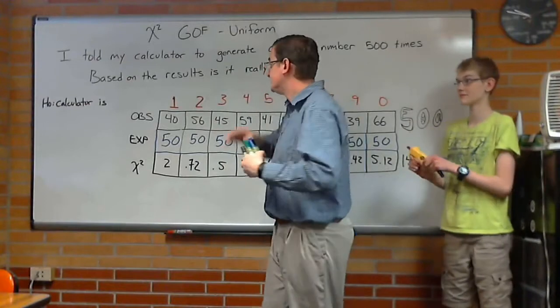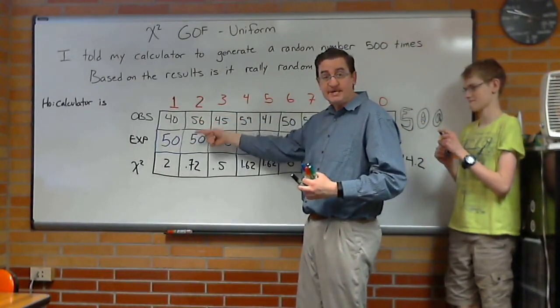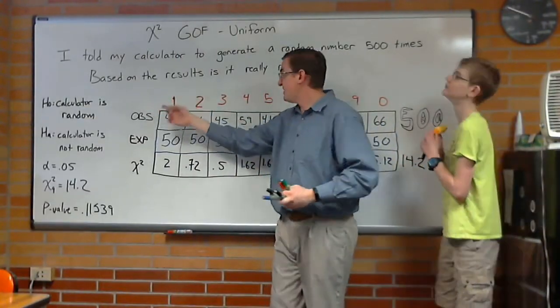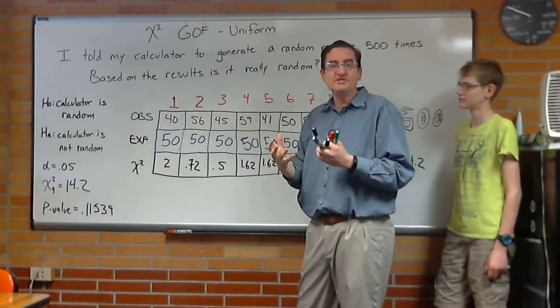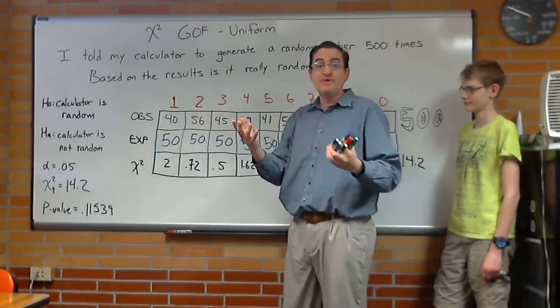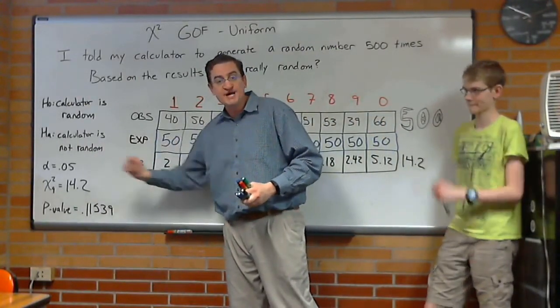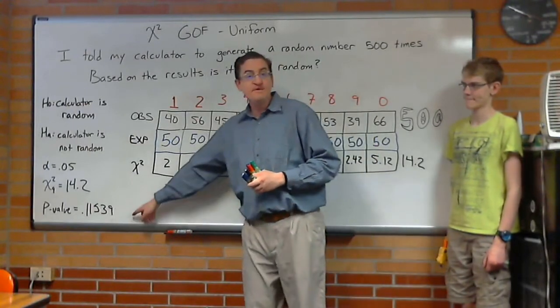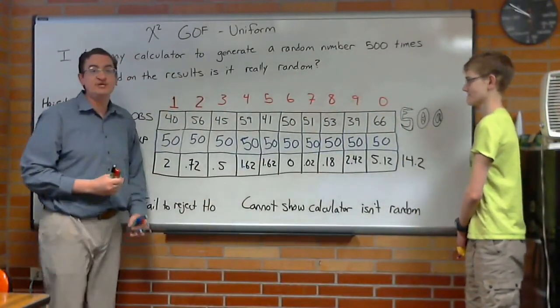So let's write out the full hypothesis test. Our null, the calculator is, well, let's see, the null says the observed equals the expected. If that was true, if it really did equal this 50-50-50, that would mean that the null was that the calculator is random, that all these expected values are even or uniform. In other words, the calculator is doing what we expect it to. There is an equal sign hidden in there, and it's important that you be able to see that. The alternative, then, would be that it's not random, that some value is more than the other. They're not equal. Alpha 0.05, we got our chi-squared with 9 degrees of freedom, because it's the number of categories minus 1, and our p-value point 11539, p-value larger than alpha, thus we fail to reject the null, and that leads us to conclude that we cannot show that the calculator isn't random.